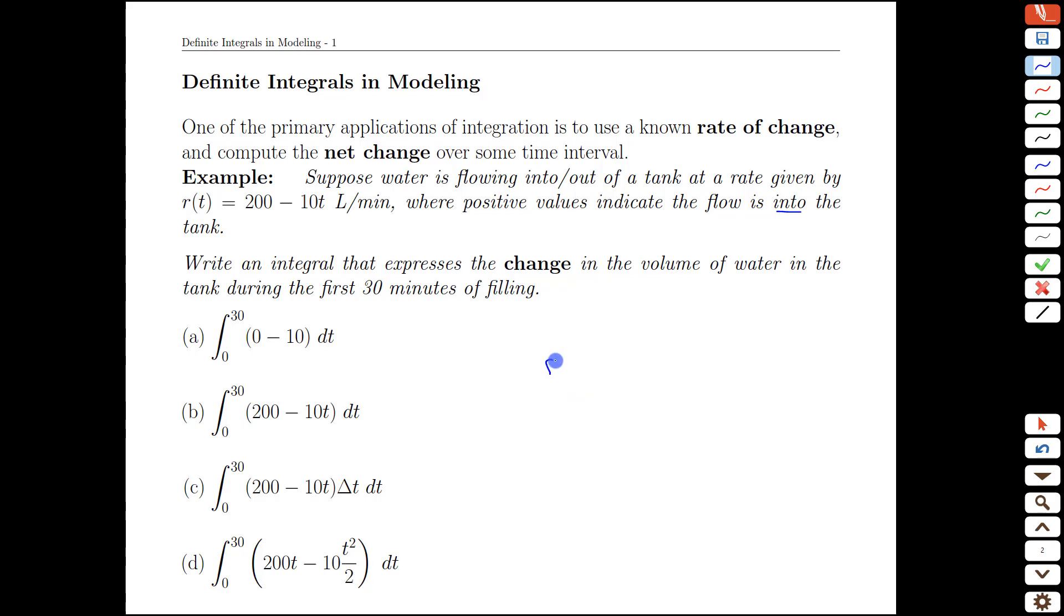All right, so we know that R of T is 200 minus 10T and a key ingredient of that is liters per minute. So if we were to sketch this out for a second, R of T and T and we have the units of liters per minute and minutes. What would we do with this graph?